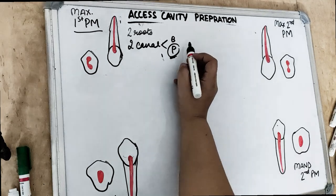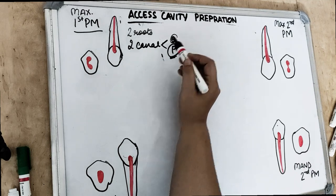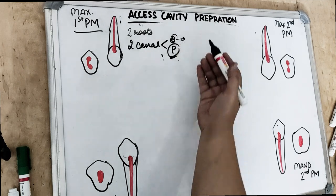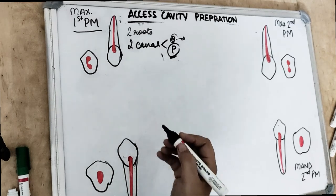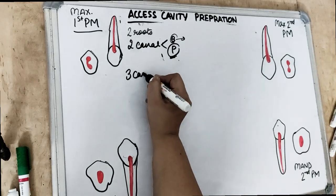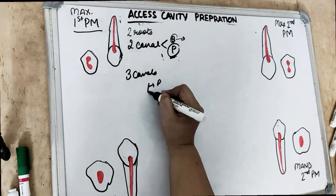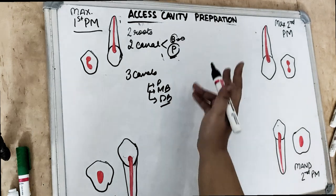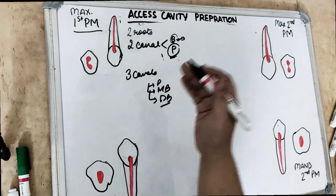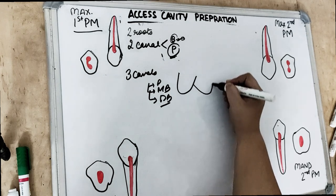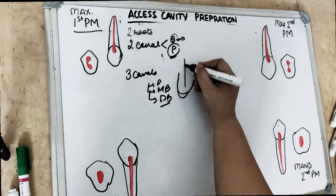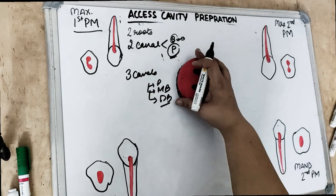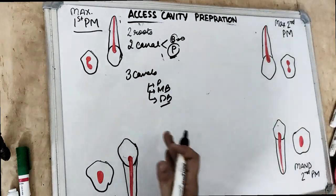The canals are present one in the buccal and one in the palatal region, and the palatal canal is the largest. In the buccal there may be more than one canal — rarely a third canal can be present. In rare cases we may have three canals: a palatal canal, a mesiobuccal canal, and a distobuccal canal. The buccal canal is below the buccal cusp and the palatal canal is below the palatal cusp, following the anatomy.